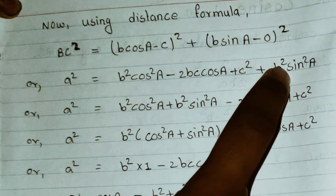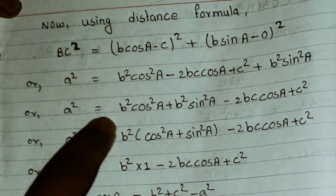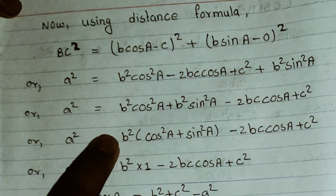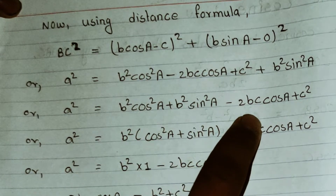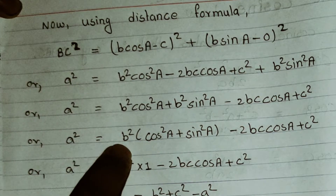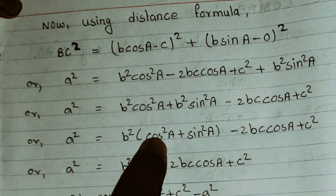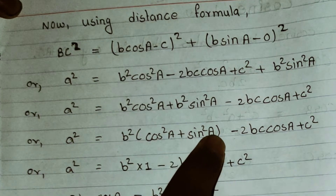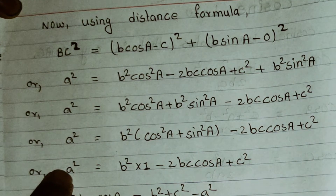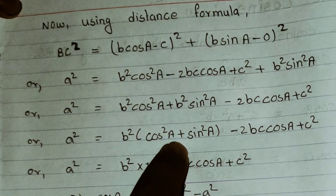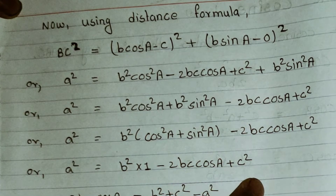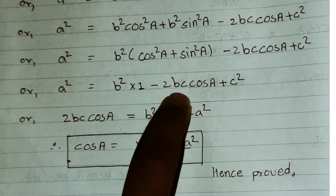Expanding: a squared equals b squared cos squared A minus 2bc cos A plus c squared plus b squared sin squared A. Taking b squared as a common factor: a squared equals b squared (cos squared A plus sin squared A) minus 2bc cos A plus c squared. Since cos squared A plus sin squared A equals 1, we get a squared equals b squared minus 2bc cos A plus c squared.